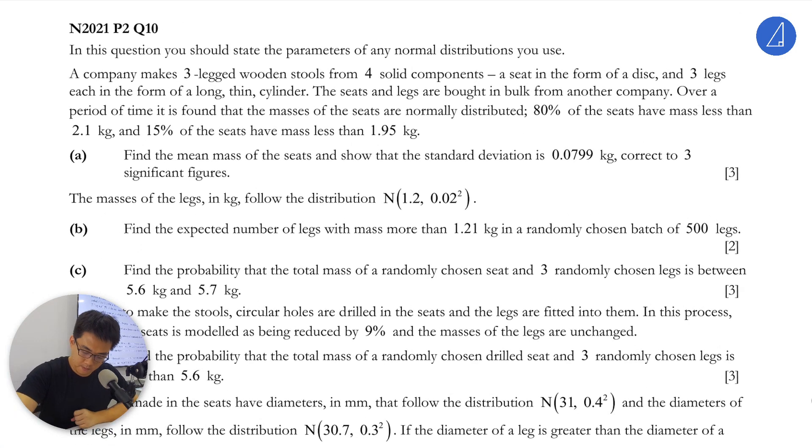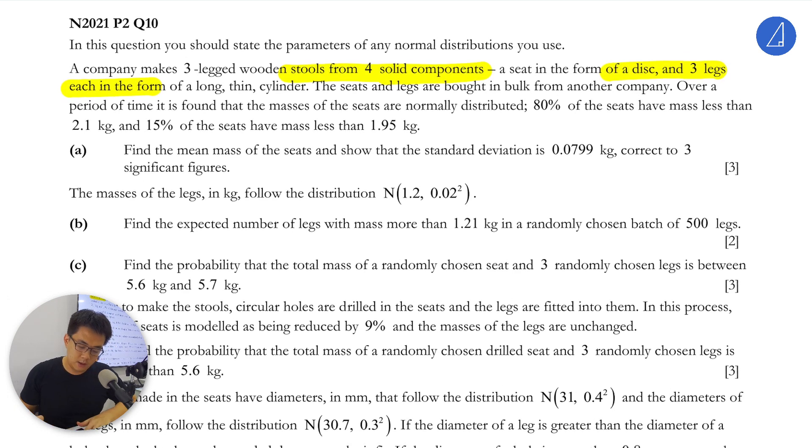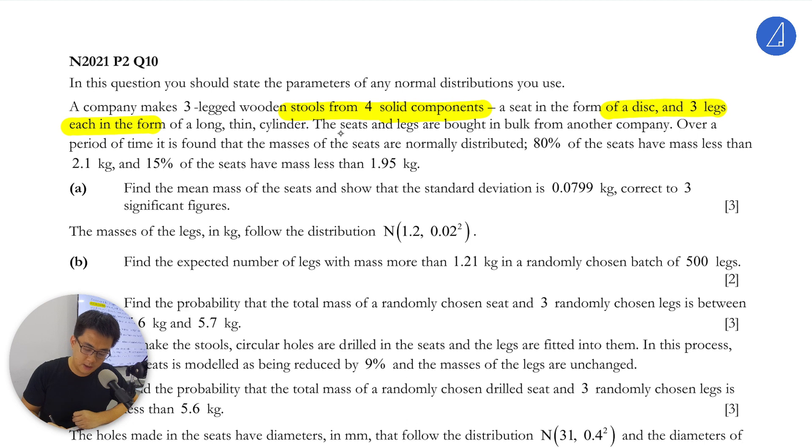A company makes three-legged wooden stools with four solid components: a seat formed of a disc and three legs, each in the form of a long thin slender piece. The seats and legs are bought in bulk from another company. I'm going to draw a disc here, then there are three legs.